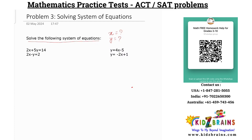Let us look at this first problem. This is neatly arranged. We have the x term, y terms, and then the constant terms. The constant terms are on the right-hand side of the equation and all the variables are on the left-hand side. By arranging the terms in this fashion, it is very convenient for us to solve.